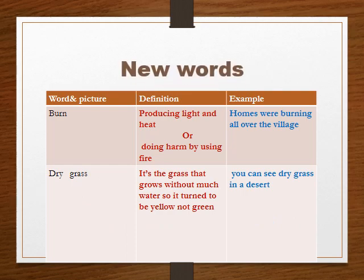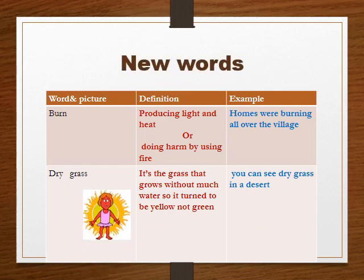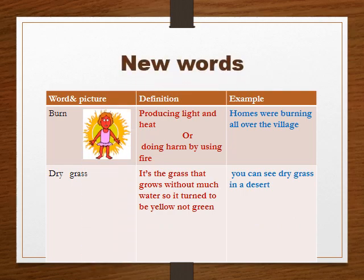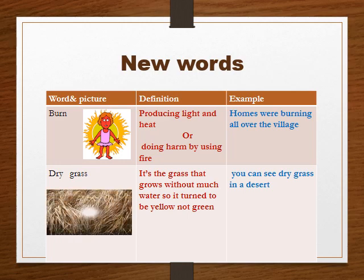New words: 'Burn' means producing light and heat, or doing harm by using fire. Homes were burning all over the village. 'Dry grass' is grass that grows without much water, so it turns yellow, not green. You can see dry grass in a desert.